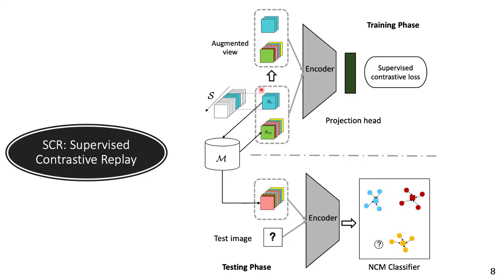Whenever we receive a mini-batch from the data stream, we also retrieve another mini-batch from the memory buffer to create the input batch. We then feed the input batch as well as an augmented view of this batch into the encoder followed by a projection head, which can be either a linear layer or a multi-layer perceptron. The model is then updated using the supervised contrastive loss, which I will cover in the next slide. During the testing phase, all the samples from the memory buffer are used to compute the prototypes, and the NCM classifier uses those prototypes for prediction.